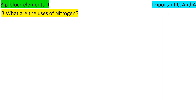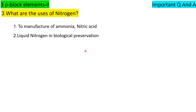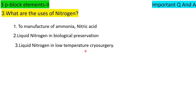What are the uses of nitrogen? First, nitrogen is used to manufacture ammonia and nitric acid. Second, liquid nitrogen is used in biological preservation of biological specimens. Third, liquid nitrogen is used in low temperature cryosurgery. These are the three uses of nitrogen, for three marks.